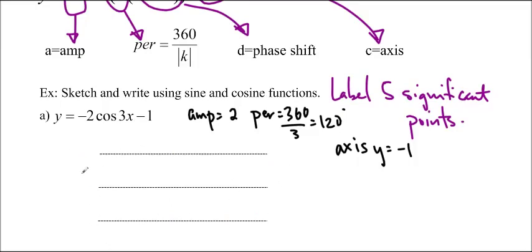So this one is y equals negative 1. This distance here is 2 because that's the amplitude. So negative 1 plus 2 is 1. And this distance here is also 2 because that's the amplitude. So negative 1 minus 2 is negative 3. So I have those points in.